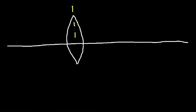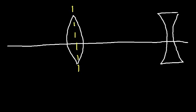This is the principal axis. The first lens will be a convergent lens, and the second lens will be a divergent lens. The convergent lens is thicker at the center, and the divergent lens is thinner at the center. It's important to know that a convergent lens is also called a convex lens, and a divergent lens is also known as a concave lens.